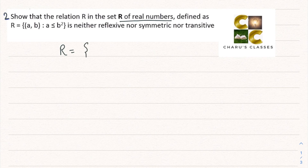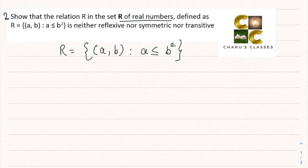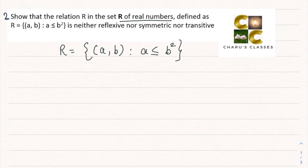This relation is {(a,b) such that a ≤ b²}, defined under real numbers. Real numbers are numbers which are both rational and irrational. We have to prove it is neither reflexive nor symmetric nor transitive, so we will look for counterexamples. If we find one example that is false, we can prove it. Let's start with reflexive.